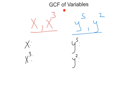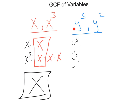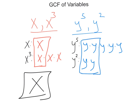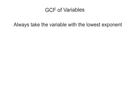Next, finding the GCF — greatest common factor — of variables. This is kind of interesting. Take x and x cubed: x is just x, and x cubed is x times x times x. The greatest amount of x's they have in common is just one, so the GCF of x and x cubed is just x. Now look at y to the 5th and y squared: y to the 5th is y times y times y times y times y, and y squared is y times y. The greatest number of y's they have in common is 2, so the GCF is y squared. The pattern is: you always take the variable with the lowest exponent, because that's the greatest amount they both share.